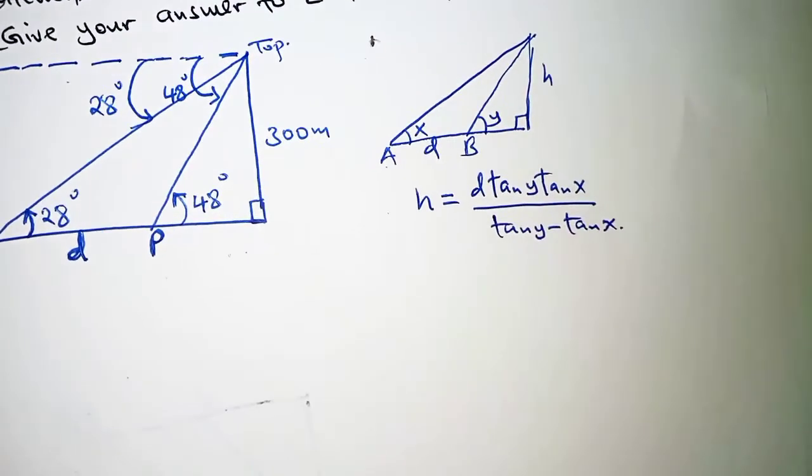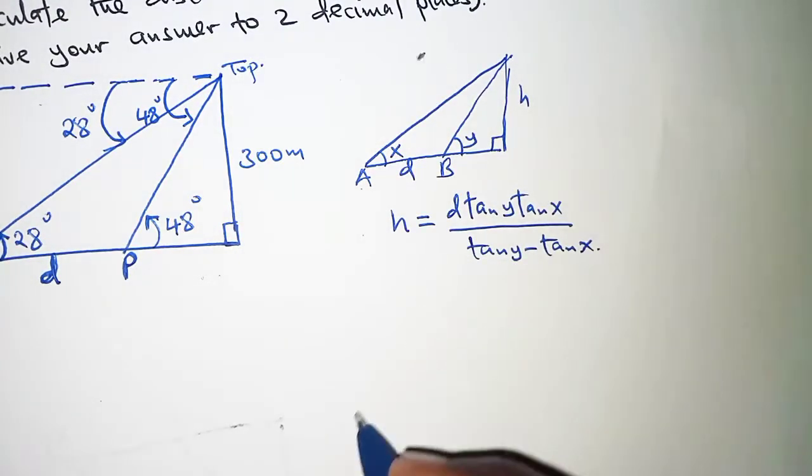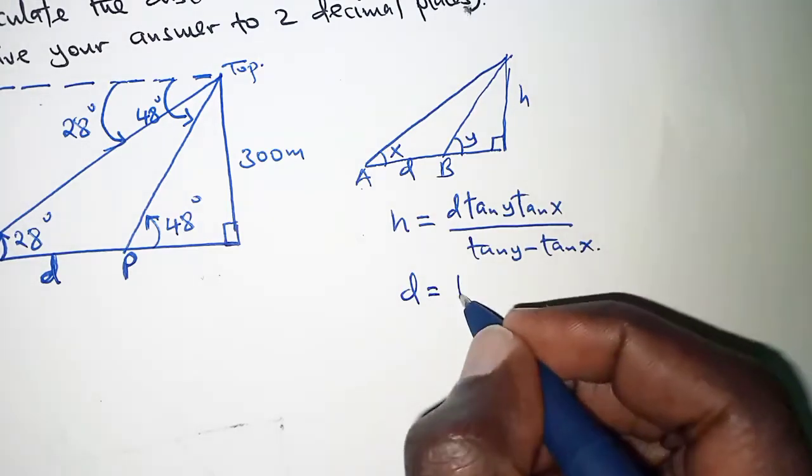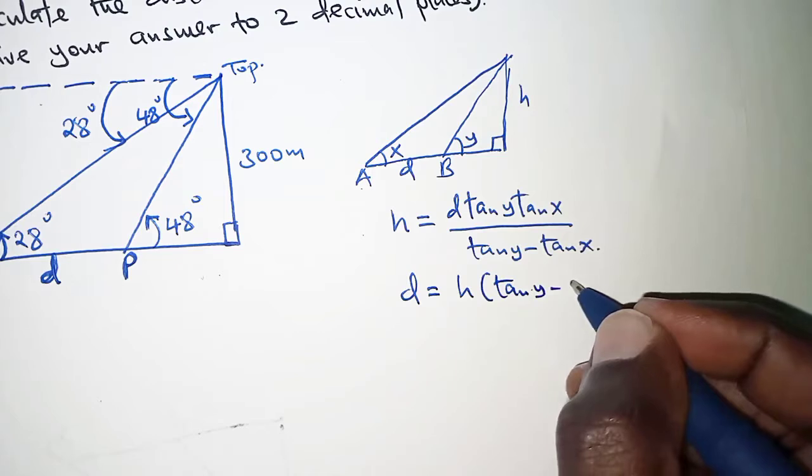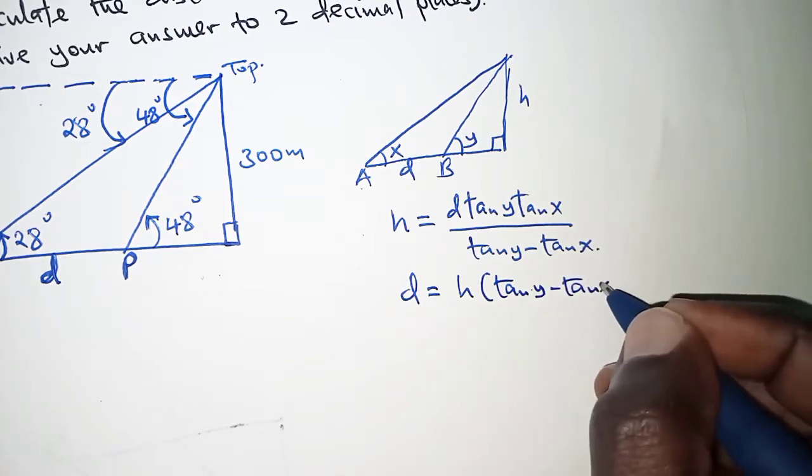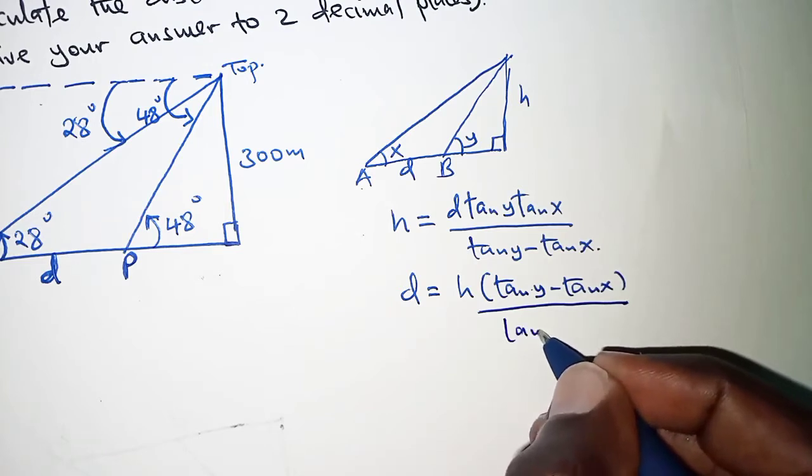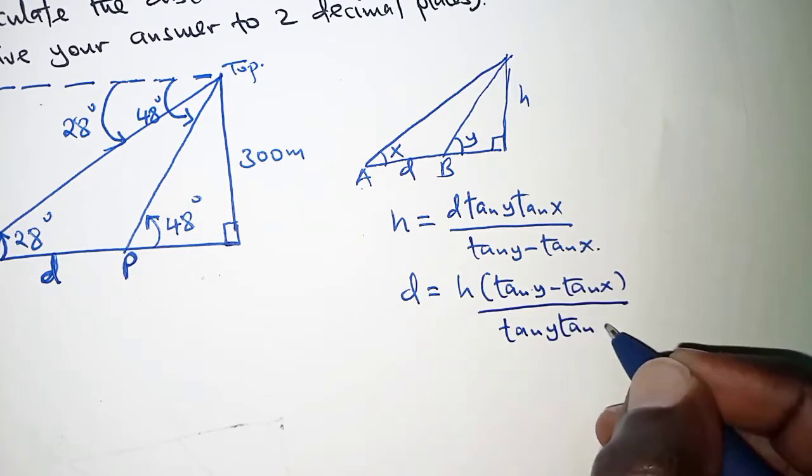And since we are interested in D not H, we are simply going to make D the subject which is just D is equal to H into tan Y minus tan X all divided by tan Y tan X.